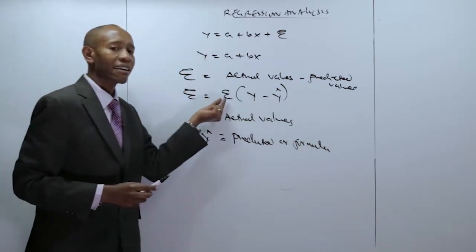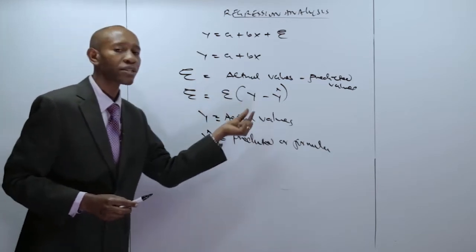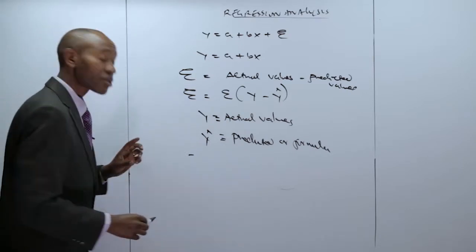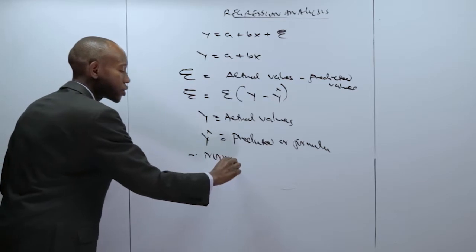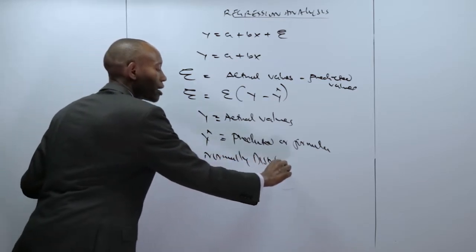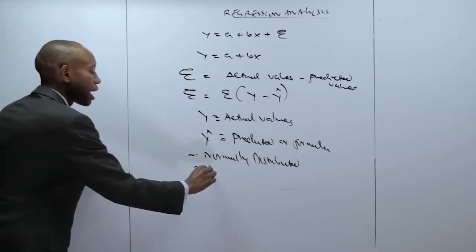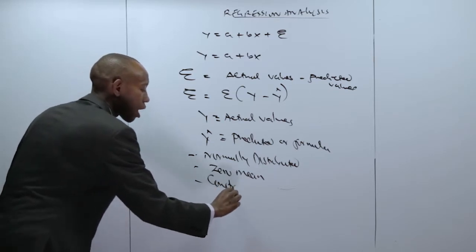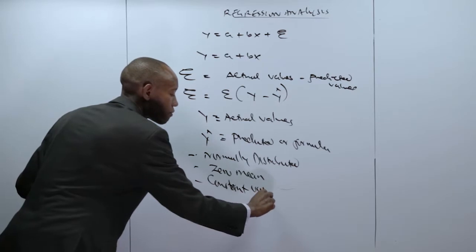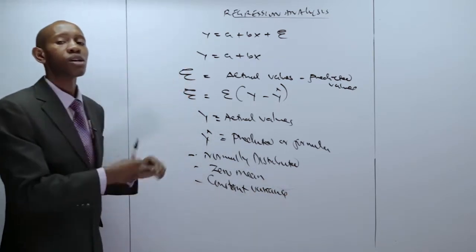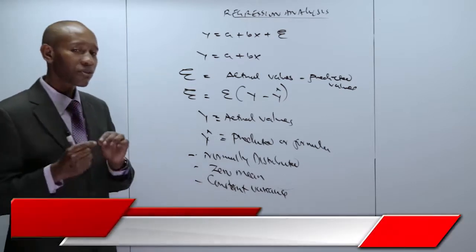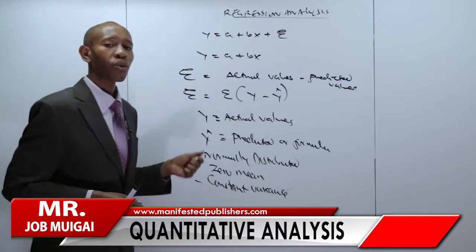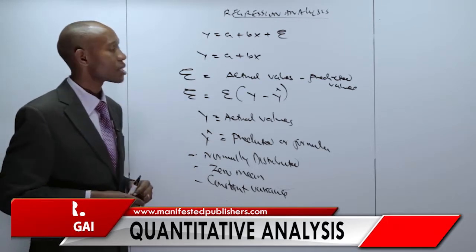This error term, which is the difference between the actual values and the predicted values, would be assumed to be: number one, normally distributed; it has a zero mean; and what we could call a constant variance. Some of these will be looked at and explained under specification analysis, which covers the assumptions we make while using the linear regression technique.